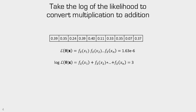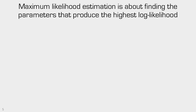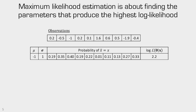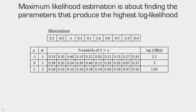We can compare log likelihoods across different sets of parameters. Maximum likelihood estimation is about finding the set of parameters that produces the highest log likelihood value. Using the same example, we take a set of parameters, compute the probabilities of observing each observation, add them up, and get a log likelihood value. We do that for different sets of parameters and get different log likelihood values. The set with the higher log likelihood value is more likely to be the true set of parameters. That's the goal of maximum likelihood estimation.